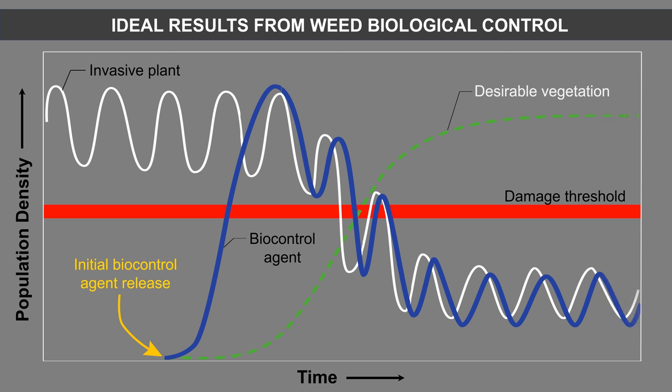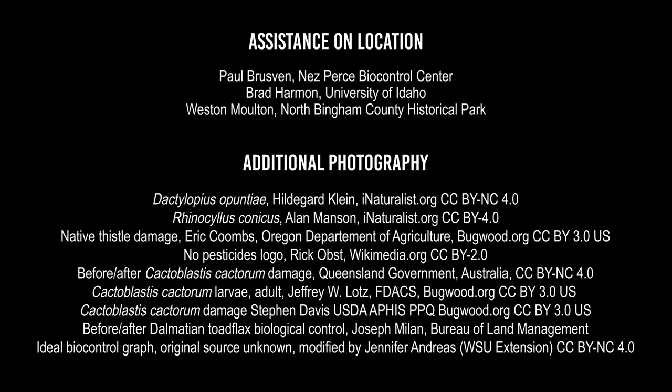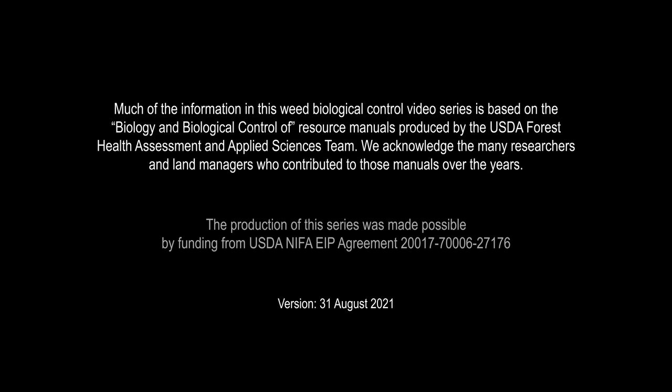Generally, it can take one to three years after release to confirm that biocontrol agents are established at a site, and even longer to cause significant impacts to populations of the target weed. For some weed infestations, five to thirty years may be needed for biological control to reach its weed management potential.